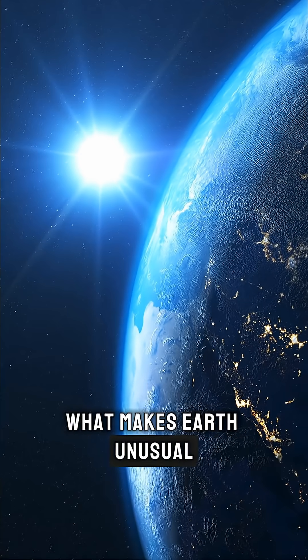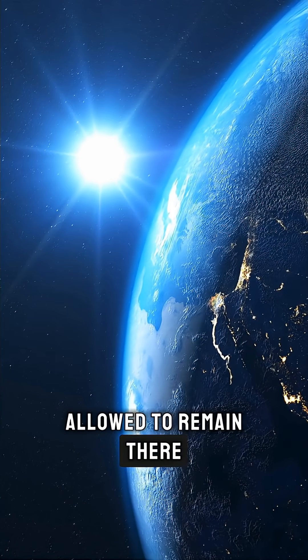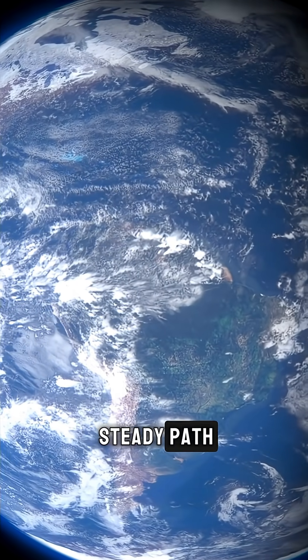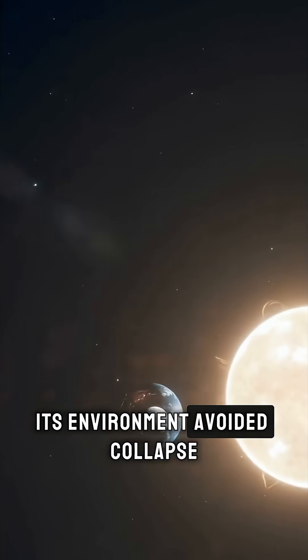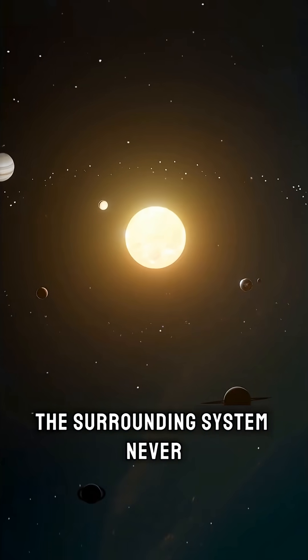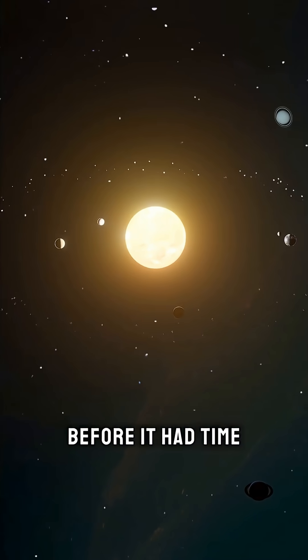What makes Earth unusual isn't simply where it formed. It's that it was allowed to remain there. For billions of years, this planet followed a steady path. Its environment avoided collapse. Its star behaved with remarkable restraint. The surrounding system never crossed the thresholds that would have erased complexity before it had time to emerge.